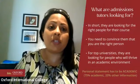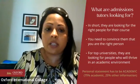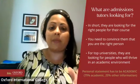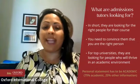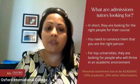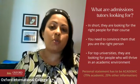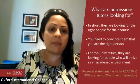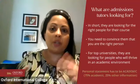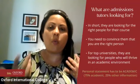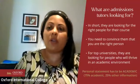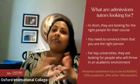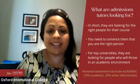What are admissions tutors looking for? You need to convince them you're the right person for top universities — people who will thrive in an academic environment. The personal statement has to be academic and supercurricular: approximately 80–90% supercurricular and around 10–20% extracurricular. Can anyone tell me in the chat — why do you think it's 80–90% supercurricular and only 10% extracurricular? Why isn't playing piano at Grade 8 given the same weighting as supercurricular?